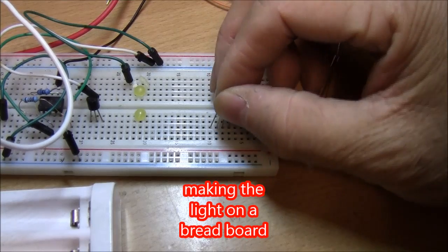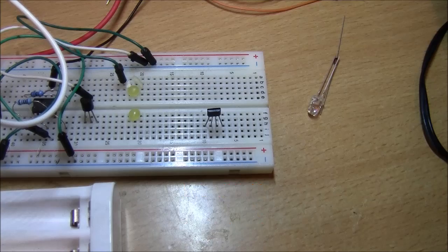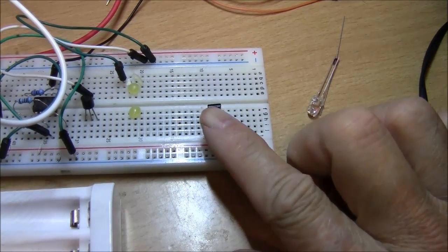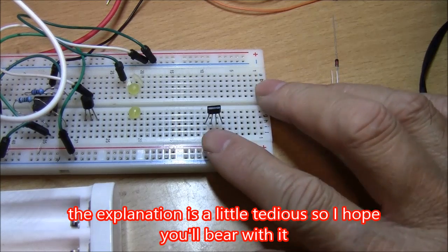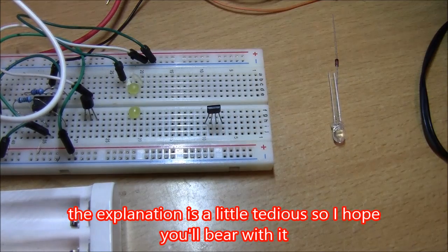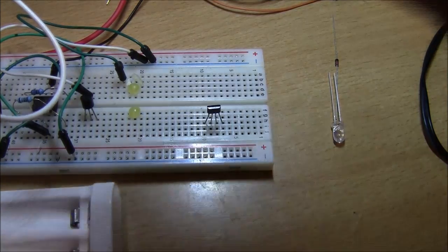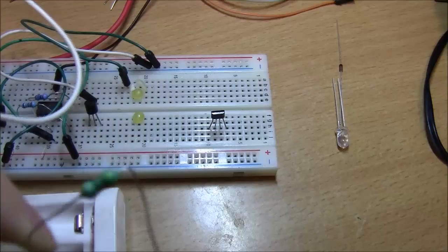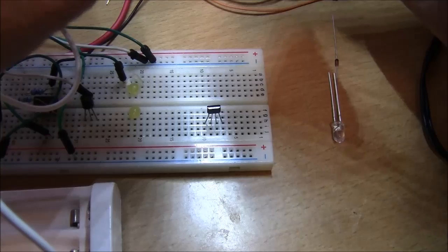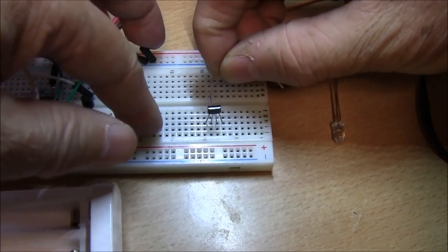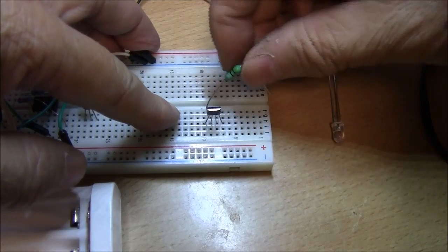So you plug your QX5252 in and the writings on the chip I would consider that the front and then it would be one two three four and then you need an inductor this one here 47 micro henry you can use a 33 and that goes between pin 2 and pin 4.